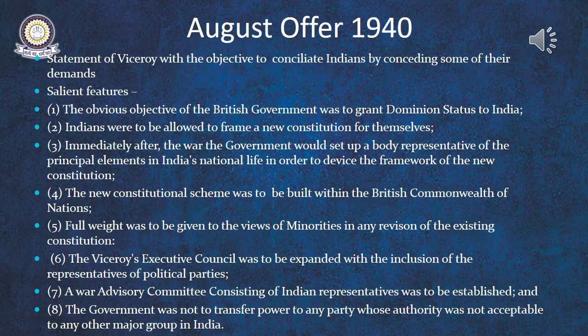The last and most important drawback was that the British government gave equal weightage to all parties, making the Muslim League a stakeholder in negotiations. The clause that the government was not to transfer power to any party whose authority was not acceptable to any other major group in India meant there were two emerging major groups — the Indian National Congress and the Muslim League — and if they did not cooperate, there would be a deadlock situation. This resulted in the failure of the August Offer, as neither Congress nor the Muslim League accepted it.